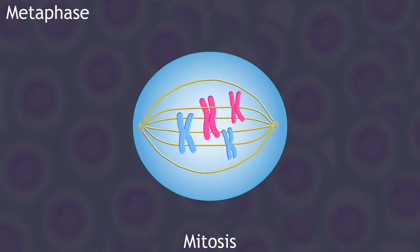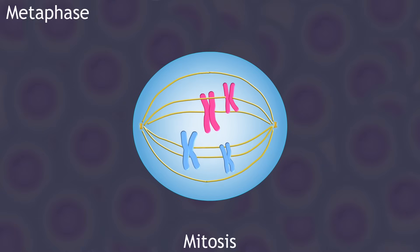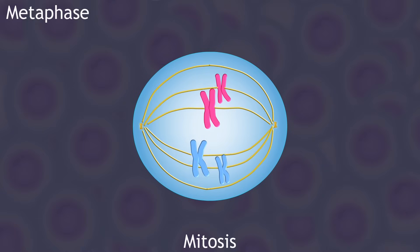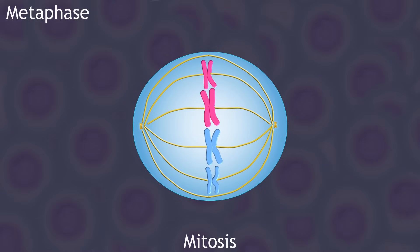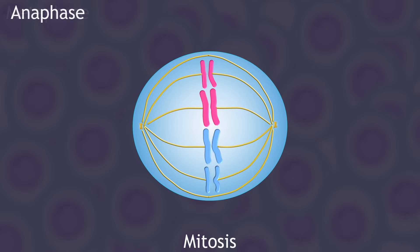Metaphase is the next phase. In metaphase, the chromosomes line up down the middle of the cell — think M for middle. This makes the chromosomes easily organized so that they can be evenly divided in half in the next phase, anaphase.